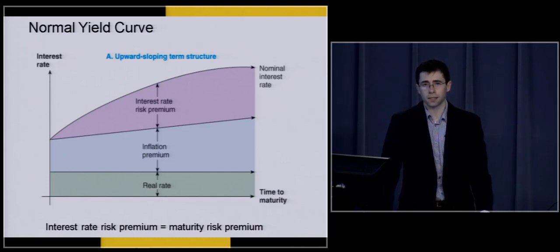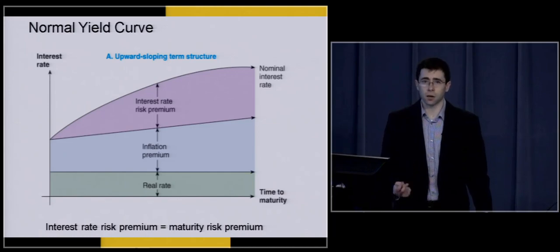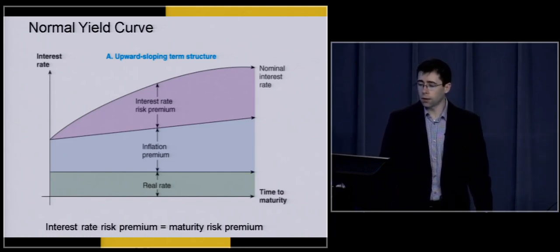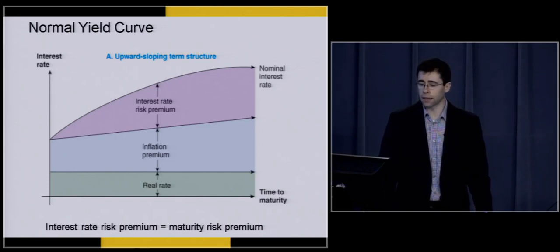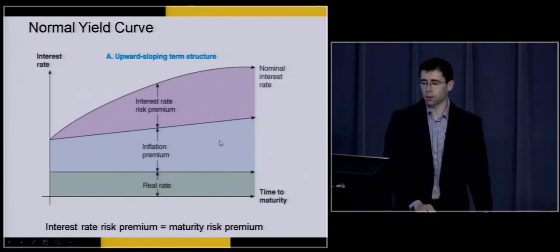In this case, because this is a yield curve, the assets being held by investors are U.S. Treasury bonds, T-bills, and T-notes. Interest rate risk is going to affect these longer-term bonds to a much greater extent than it would affect a one-month T-bill, as I showed you in that Excel spreadsheet.